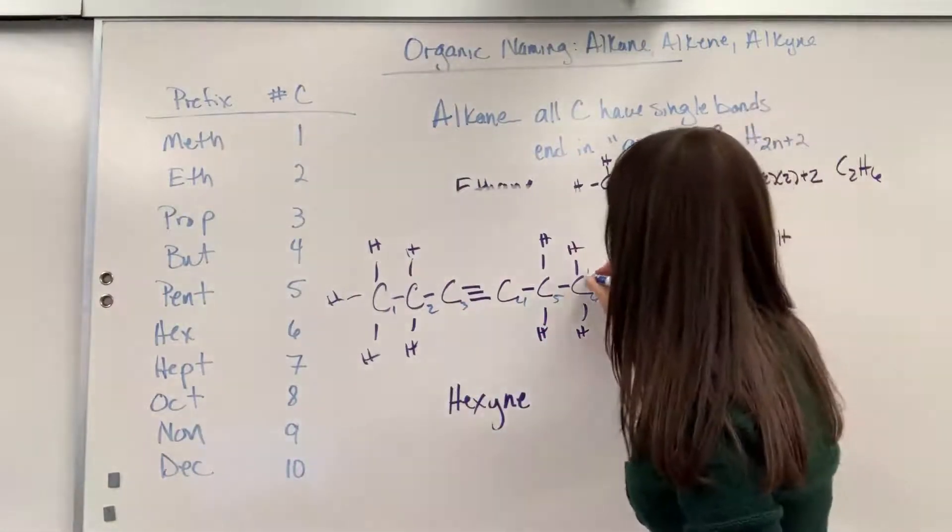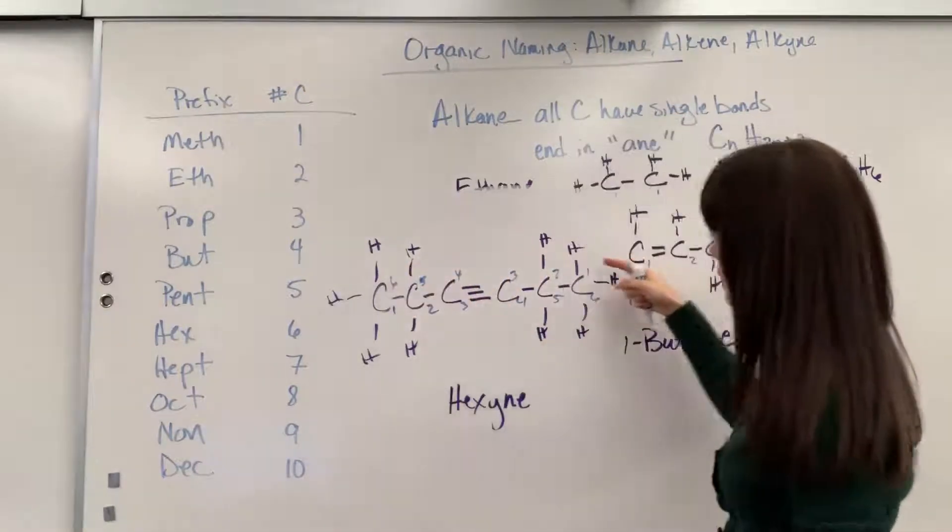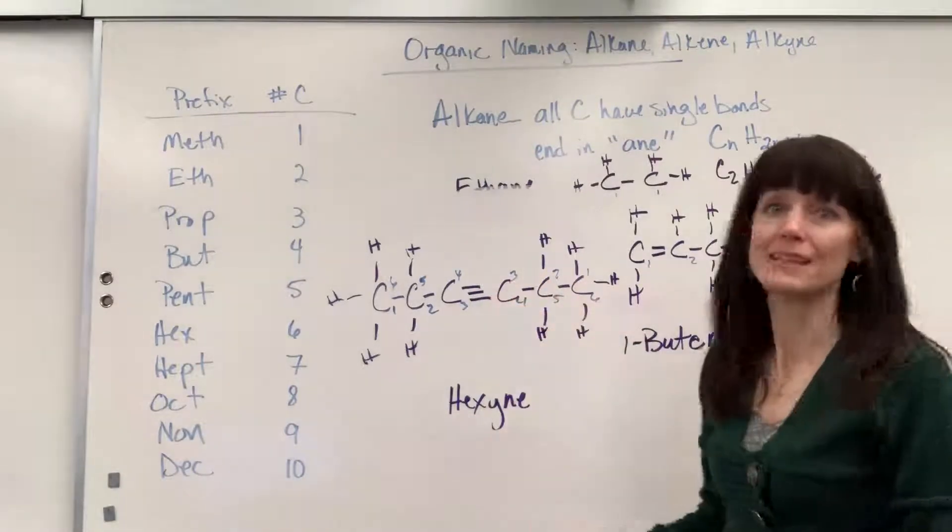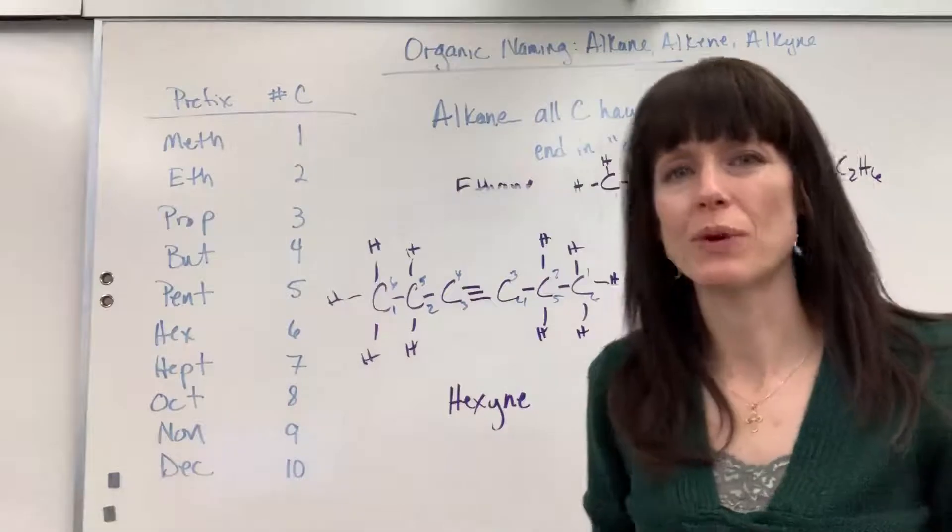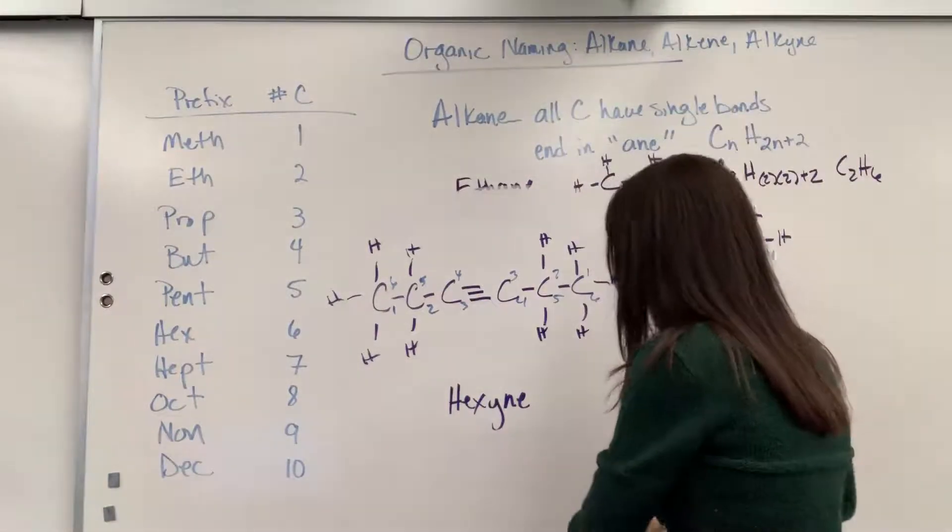Right to left. We've got one, two, three, four, five, six. So looking this way, check it out. The lowest carbon number to touch the triple bond is a three. So it doesn't matter which way we number it.